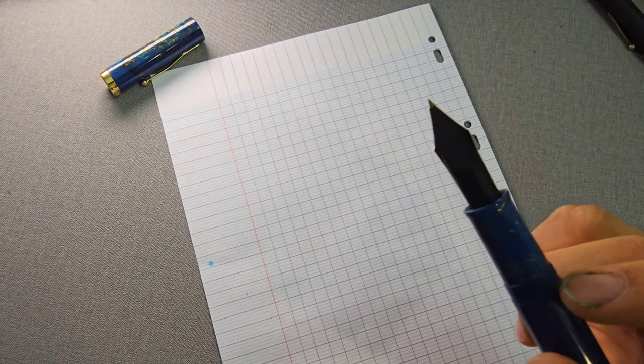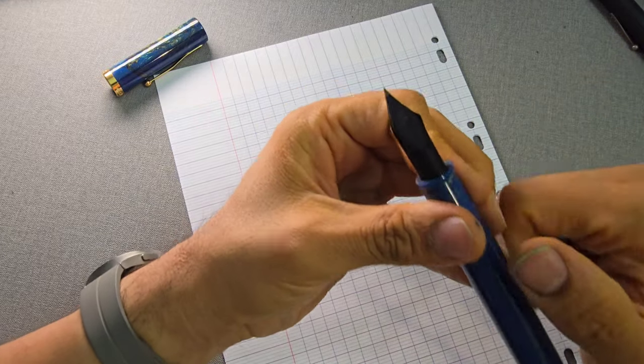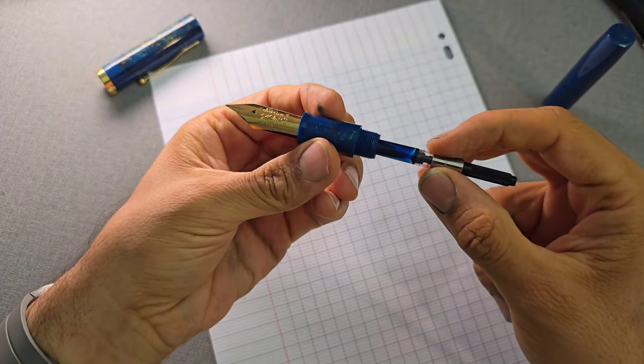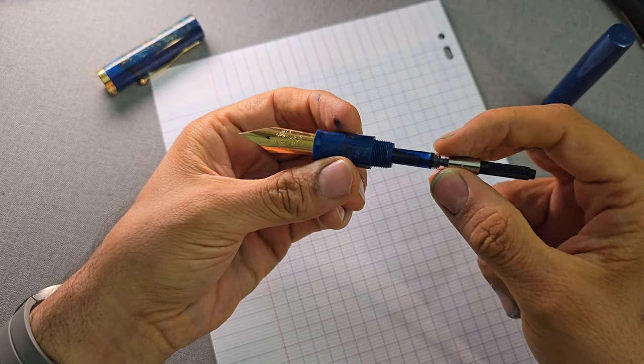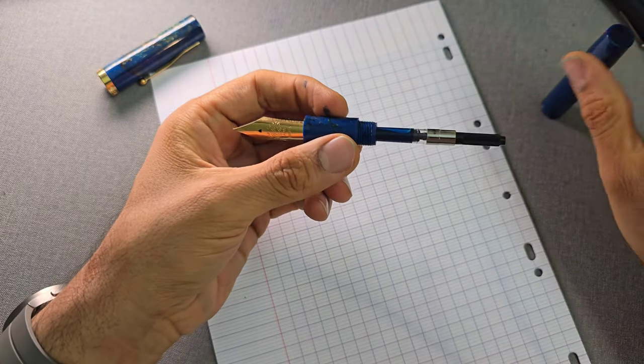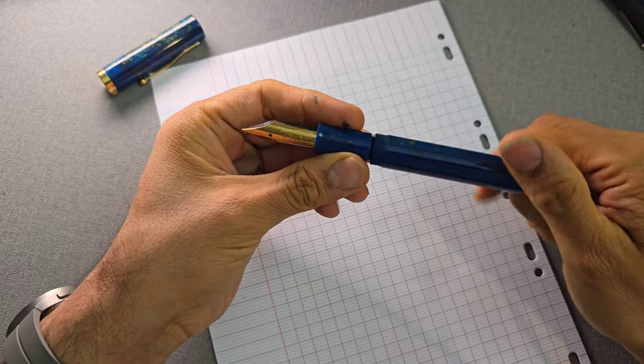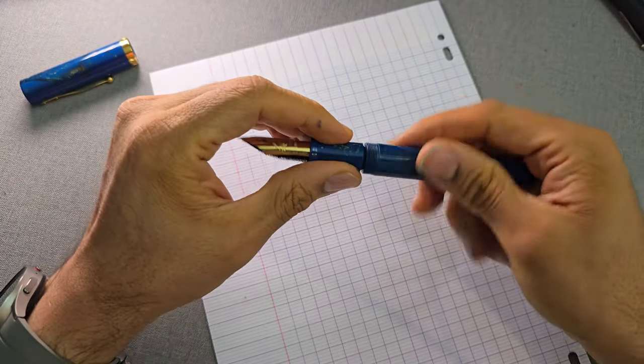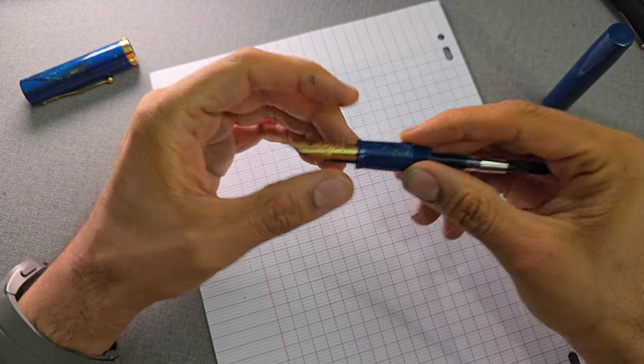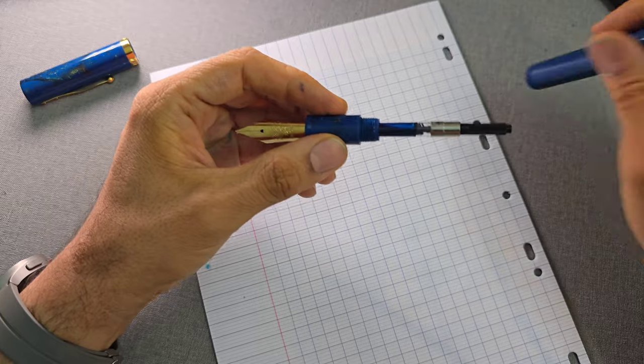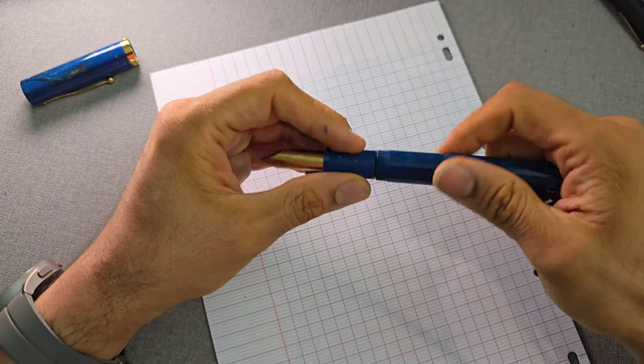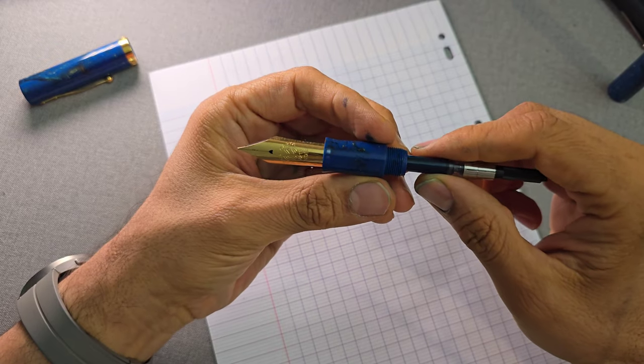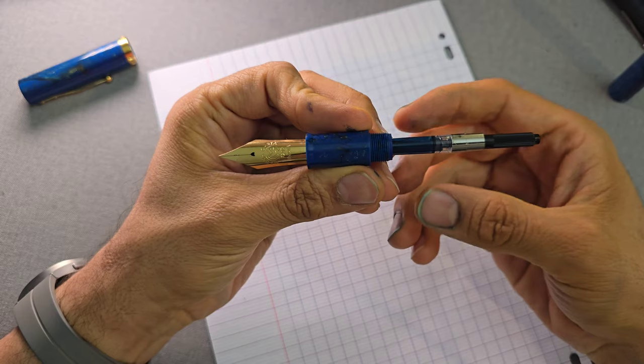The nib is actually removable, it's friction fit. You can just pull it out. Unscrewing this will reveal the very very minuscule, tiny tiny converter. This reminds me of that show called Curb Your Enthusiasm where Larry David was visiting the guy in the hospital and the nurse was telling him about things that were small and large. He was saying the problem is not the small converter but rather the large nib.